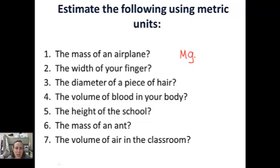Megagrams is a million grams, that's what I would use. The width of your finger, we already discussed, that's a centimeter. Diameter of a piece of hair, micrometers or nanometers. It's about 50 micrometers. How about this one? The mass of an ant. Okay, so one paper clip is one gram. So I would probably use centigrams or probably milligrams. So that's a few examples. Please try the rest on your own.